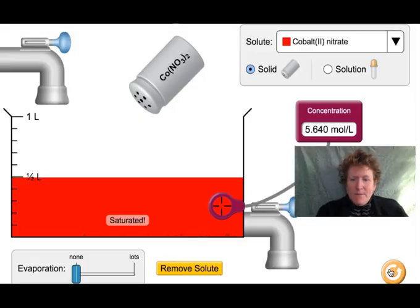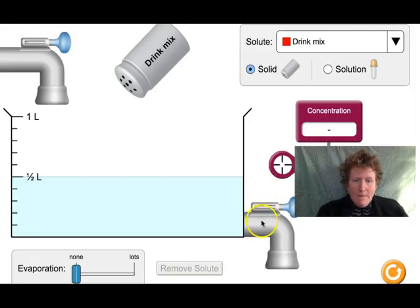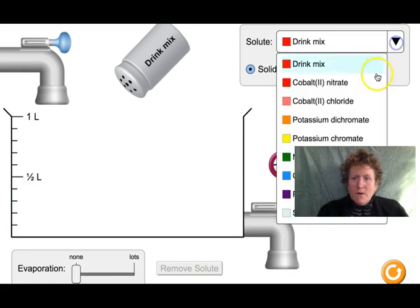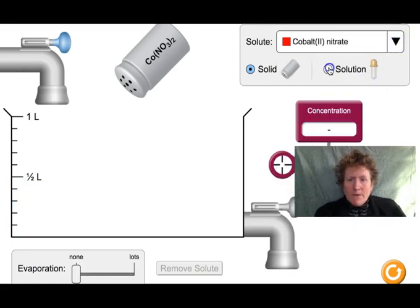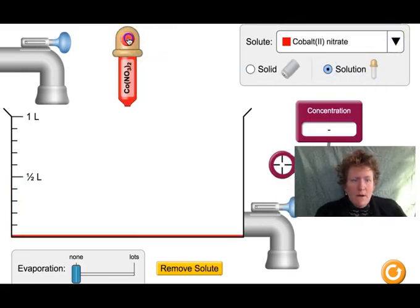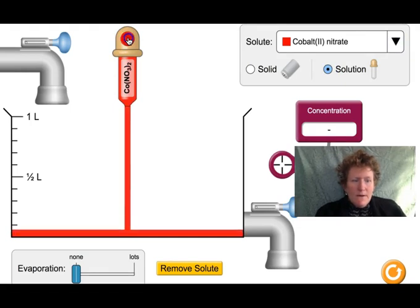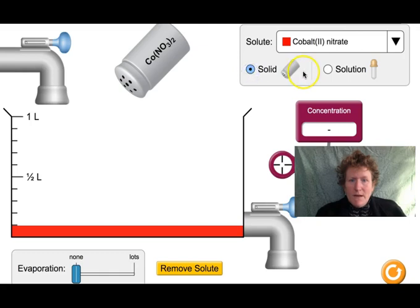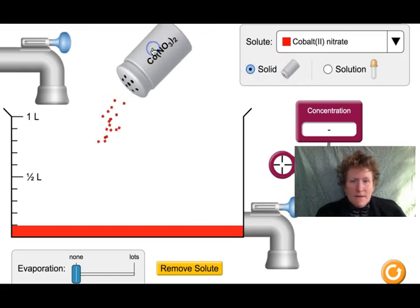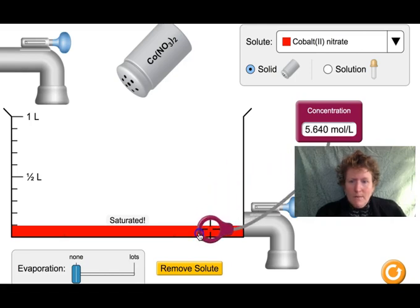So hit the reset button. Drain the tank here. Let the water out because we want just solution here. We're going to switch to cobalt nitrate. We're going to switch to solution here. We're going to fill it up to one-tenth of a liter. Then we're going to switch over to solid. Add solid till it's saturated. Okay, we've hit saturation. We're going to measure the concentration.